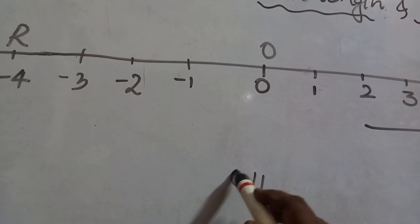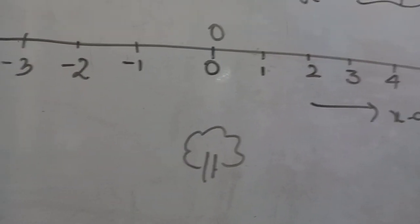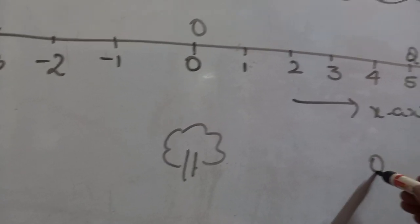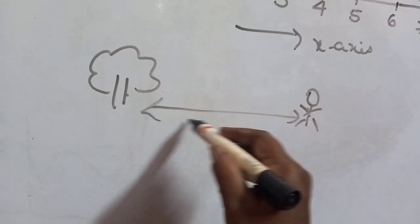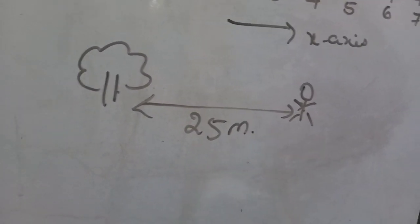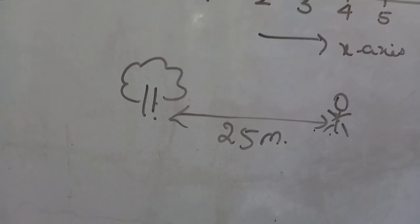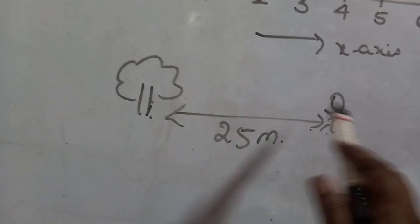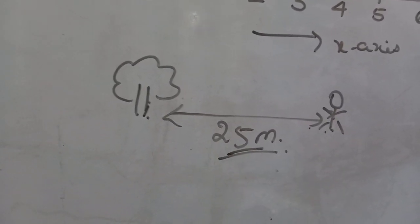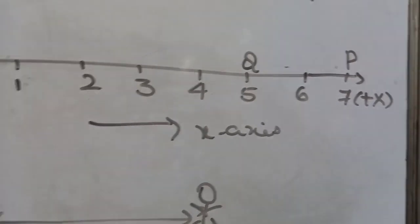For example, if there is a mango tree — a stationary object — and a person is standing at a distance of 25 meters from the mango tree, then the tree is taken as the reference to measure the distance of that person. The position of the man from the mango tree is 25 meters.